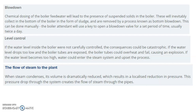Next is the flow of steam to the plant. When steam condenses, its volume is dramatically reduced, which results in a localized reduction in pressure. This pressure drop through the system creates the flow of steam through the pipes.